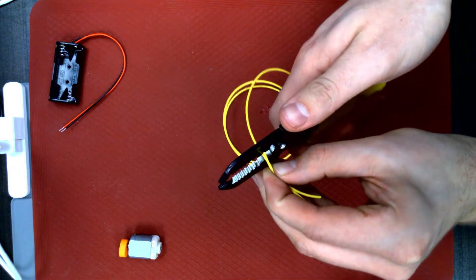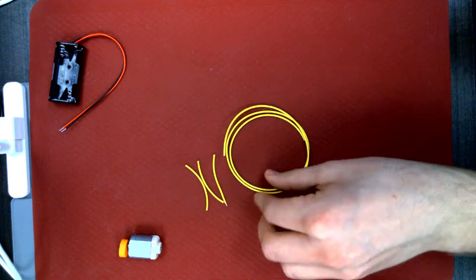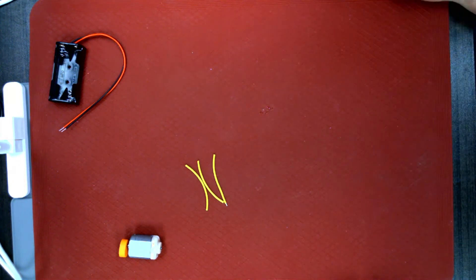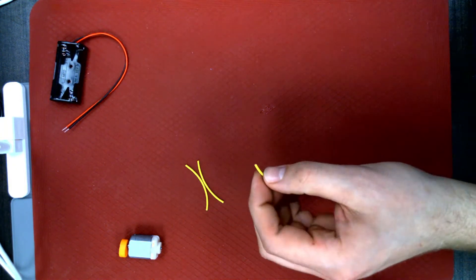Next, cut out 3 lengths of wire, each approximately 7cm long, and strip about 1cm off of each end. It helps to twist the stripped ends to keep the strands of wire together.